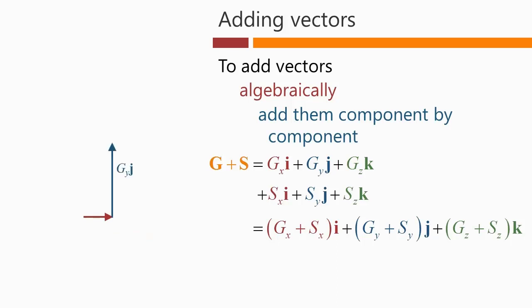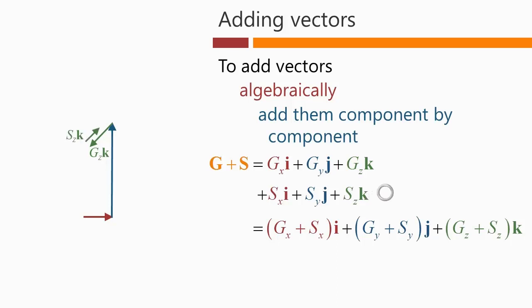Similarly, we can do the same thing in the y direction. Here's our component of vector G in the y direction, and here's our component of vector S — we add the two together to get the net vector in the j direction, or the y axis. Then along the z axis — remembering we're looking at a perspective diagram — here's our component of vector G along z, and we add our component of vector S along z. In this case it's going in the opposite direction, so the net vector along z is this short arrow here. Adding all those together gives us the total vector G plus S.